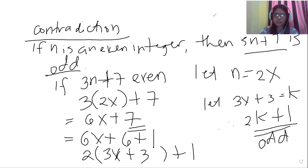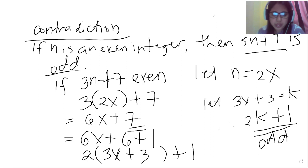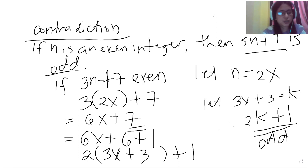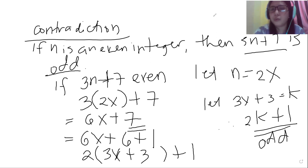So this is the contradiction. We assumed 3N plus 7 is even, but the result is odd. Therefore, we can conclude that if N is an even integer, then 3N plus 7 is odd. This completes the proof by contradiction. Thank you for watching.